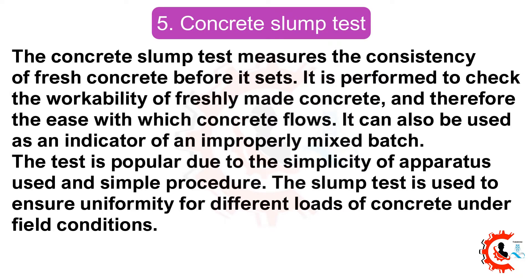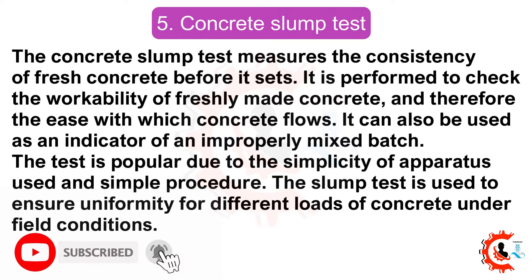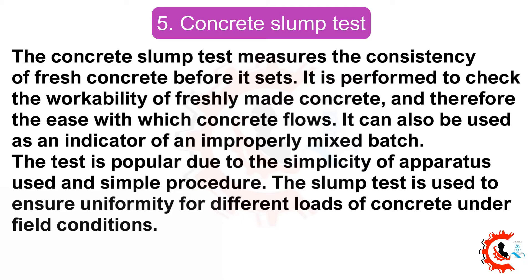Five: concrete slump test. The concrete slump test measures the consistency of fresh concrete before it sets. It is performed to check the workability of freshly made concrete and therefore the ease with which concrete flows. It can also be used as an indicator of an improperly mixed batch. The test is popular due to the simplicity of apparatus and procedure, and is used to ensure uniformity for different loads of concrete under field conditions.